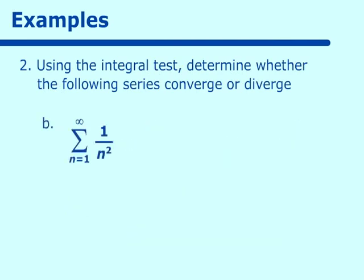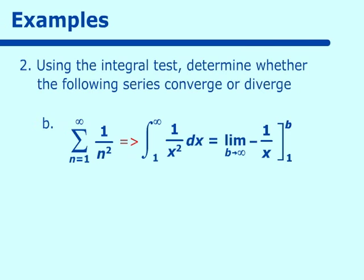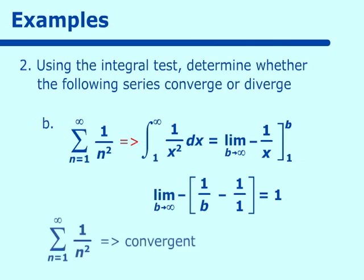Now 1 over n squared. We integrate: the integral from 1 to infinity of 1 over x squared dx equals negative 1 over x, evaluated from 1 to b as the limit as b approaches infinity. That becomes negative 1 over b minus negative 1 over 1. As b approaches infinity, this equals 1. We do get a finite result, therefore our series is convergent.